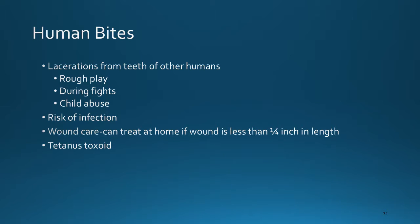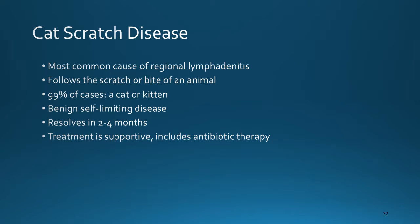Human bites occur during rough play, fights, and may also be a result of child abuse. There is a definite risk of infection, so wound care is important. These wounds can be treated at home if the wound is less than one-fourth inch in length — it should be irrigated and washed vigorously with soap and water, and ice can be applied. If the child is not current with tetanus immunization, they should seek medical attention. For cat scratch disease, the most common cause of regional lymphadenitis, 99% of cases result from a scratch or bite from a cat or kitten. It is a benign, self-limiting condition that resolves in two to four months, and treatment is supportive with antibiotic therapy.